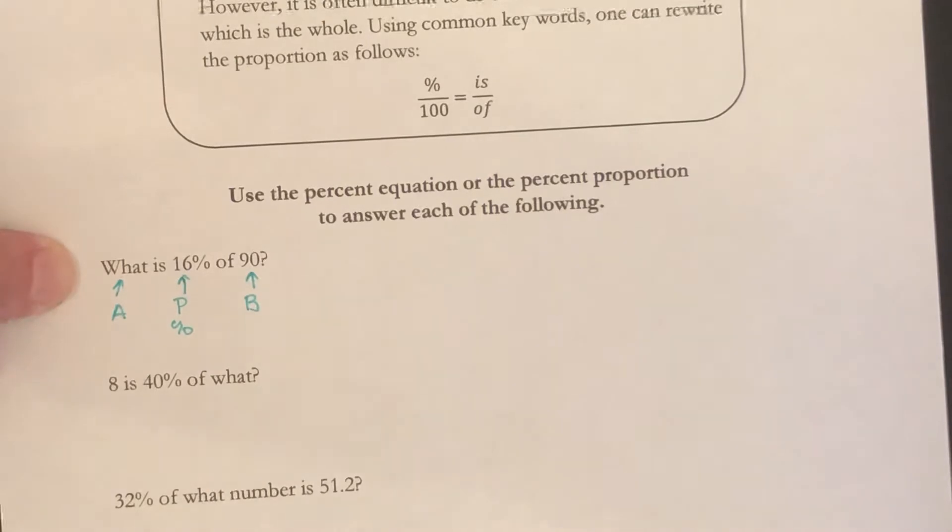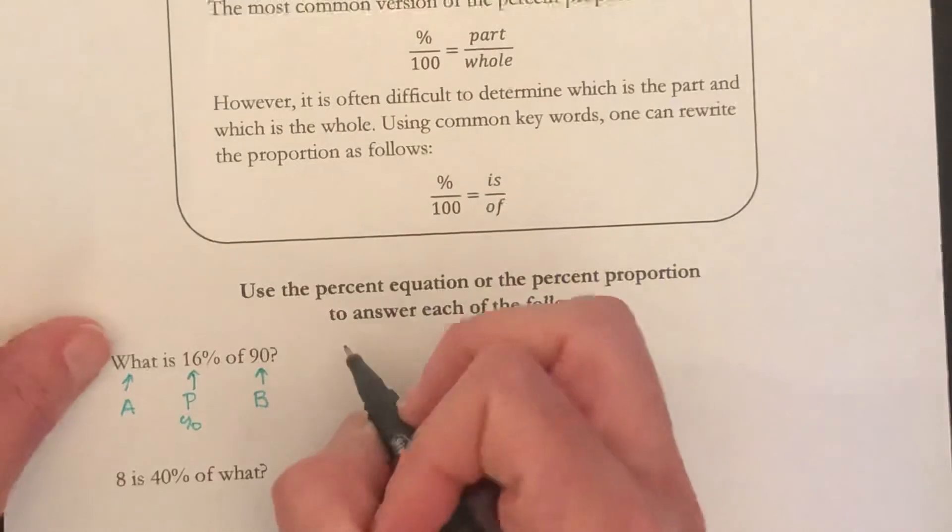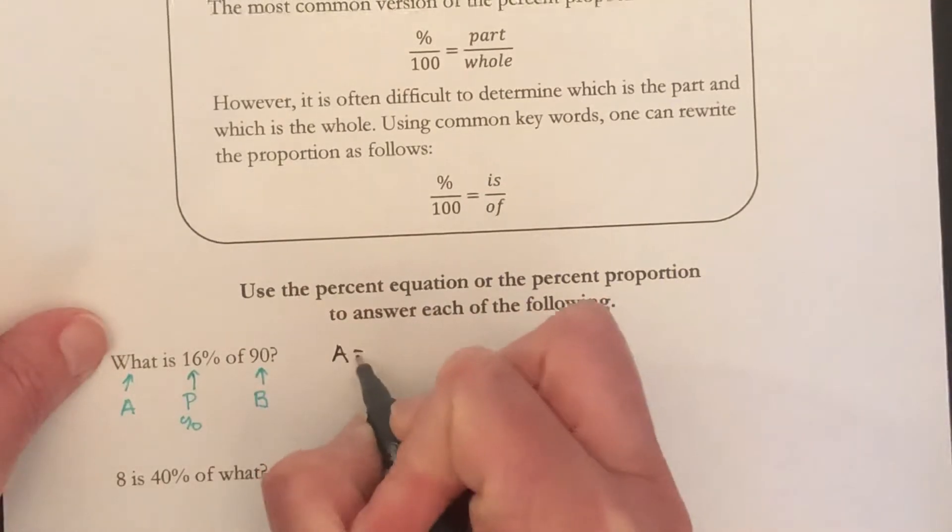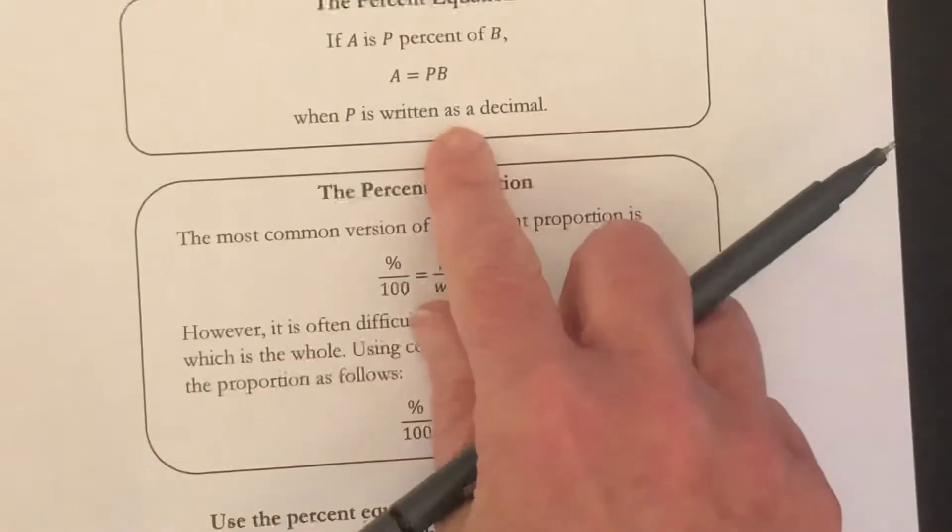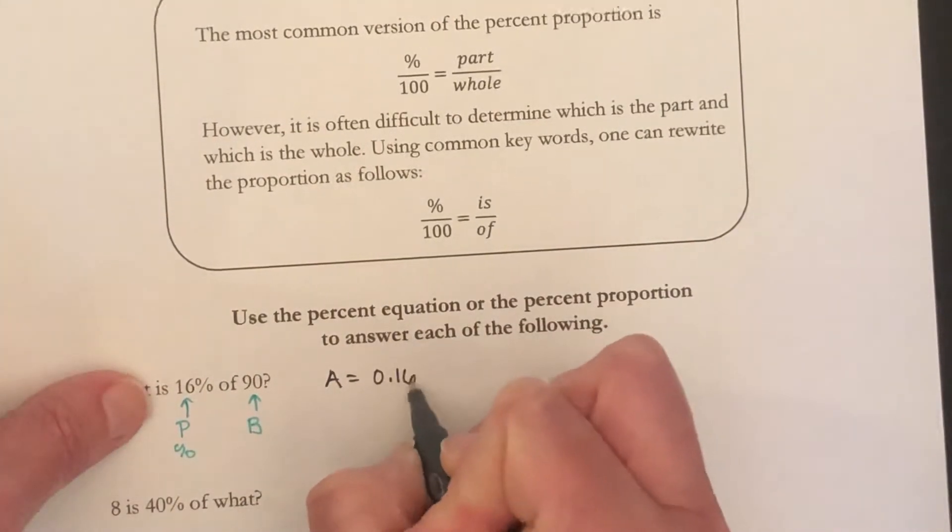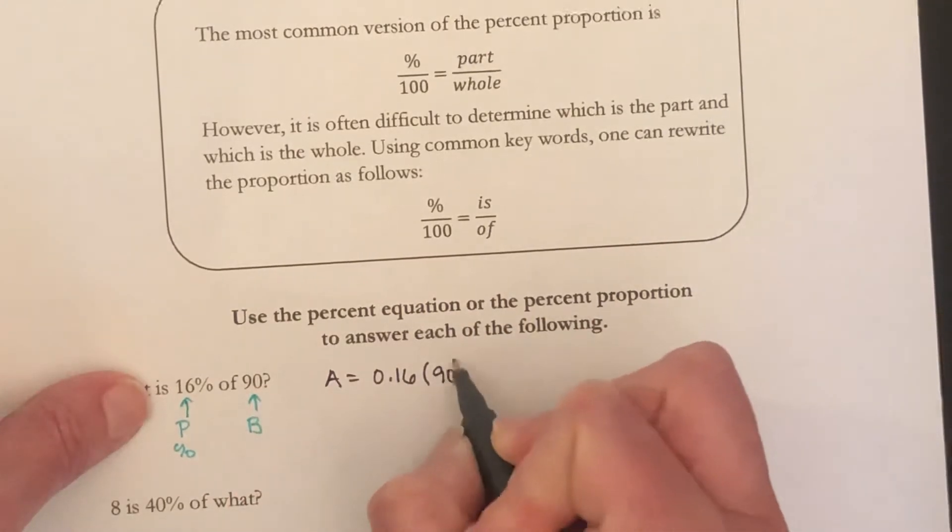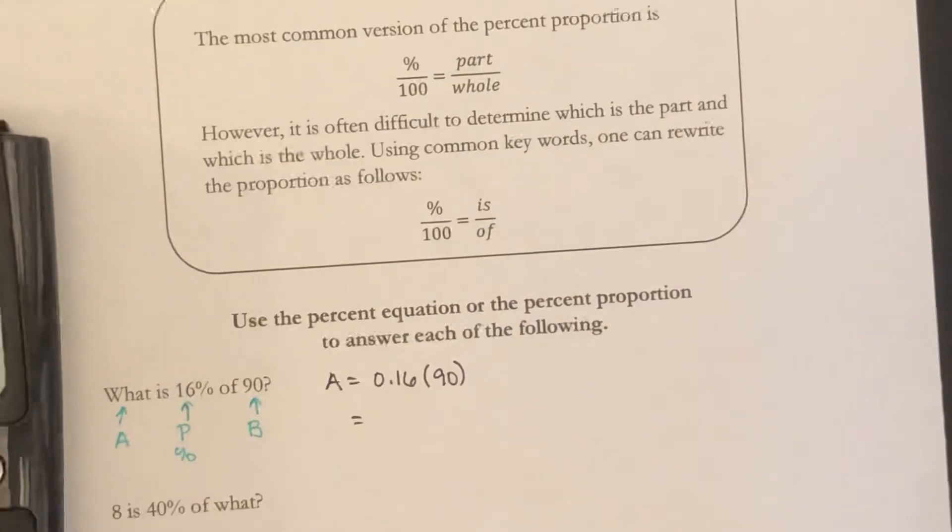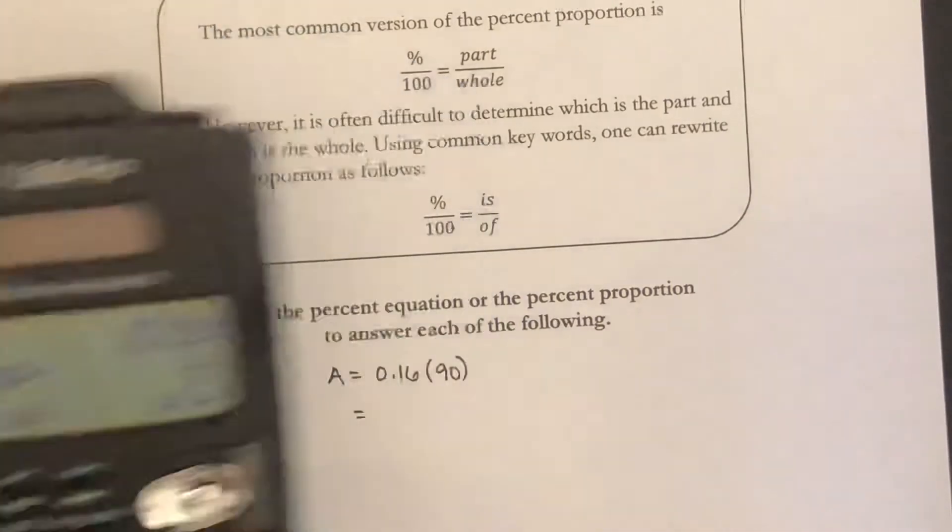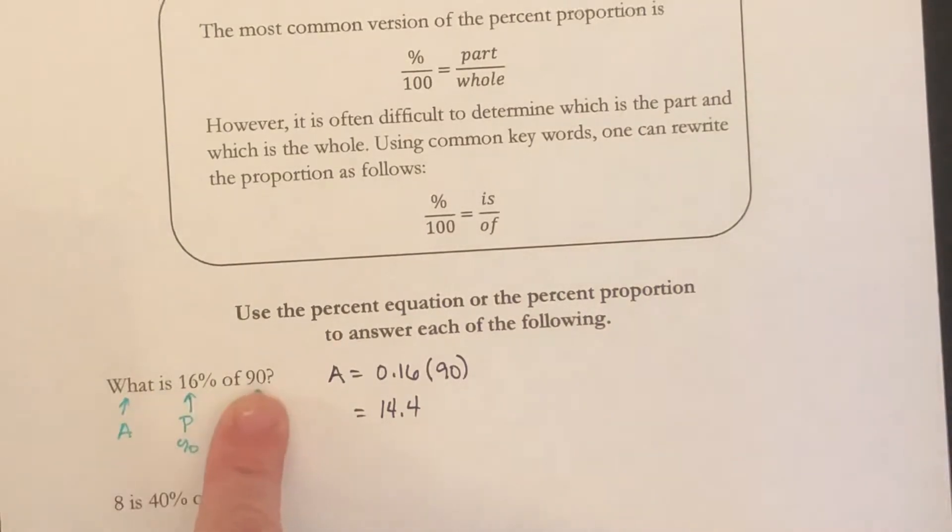If I use the formula, the percent equation, A equals P times B. So A equals the percent, and the percent needs to be written as a decimal. So 16% is 0.16 times B, which is 90. So this is 90 times 0.16, which equals 14.4. So 14.4 is 16% of 90.